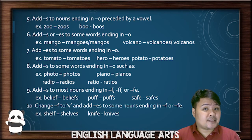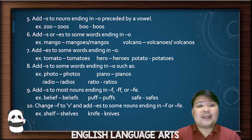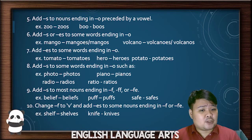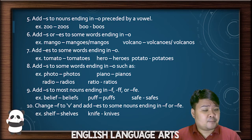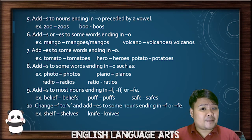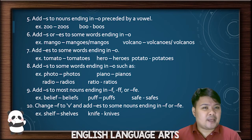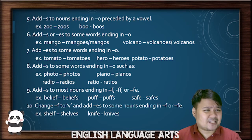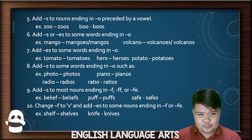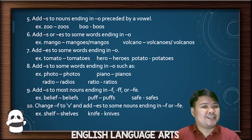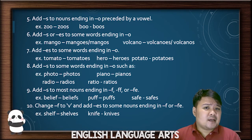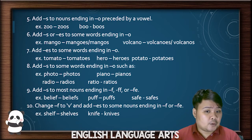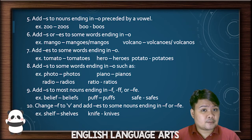In rule 7, sometimes if a noun ends in O, you only have to add ES — there's no other way. For example, tomato becomes tomatoes, hero becomes heroes, and potato becomes potatoes. You cannot just add S. And in rule 8, some words ending in O just take S: photo becomes photos, radio becomes radios, piano becomes pianos, ratio becomes ratios.